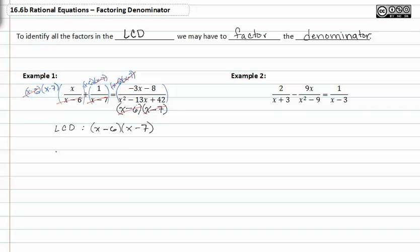Now we can rewrite our equation. x times x minus seven plus one times x minus six equals negative three x minus eight.